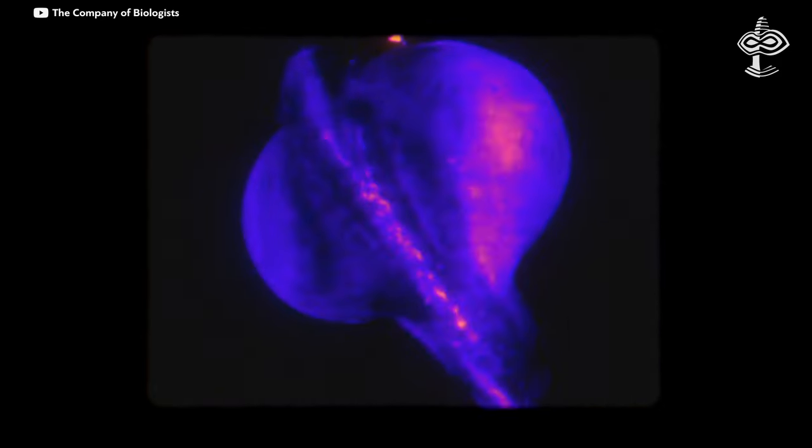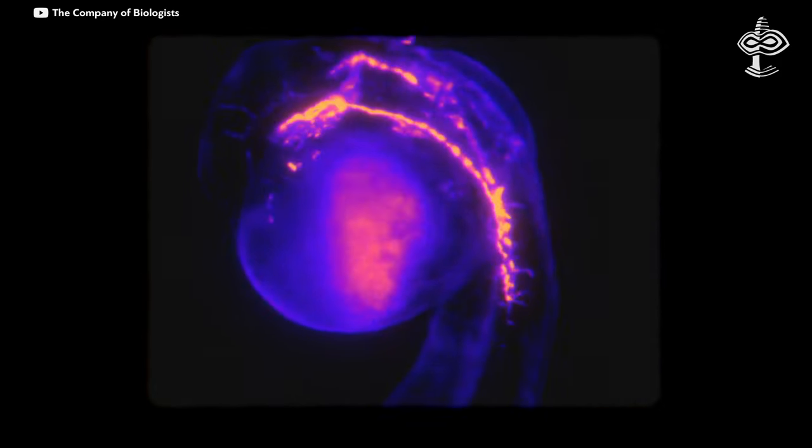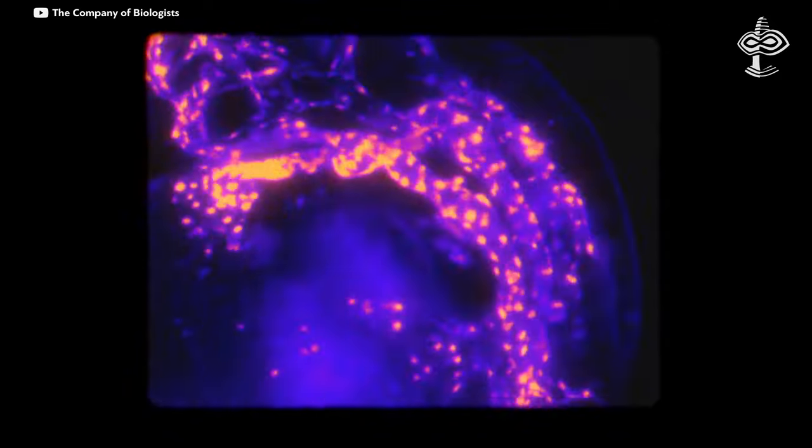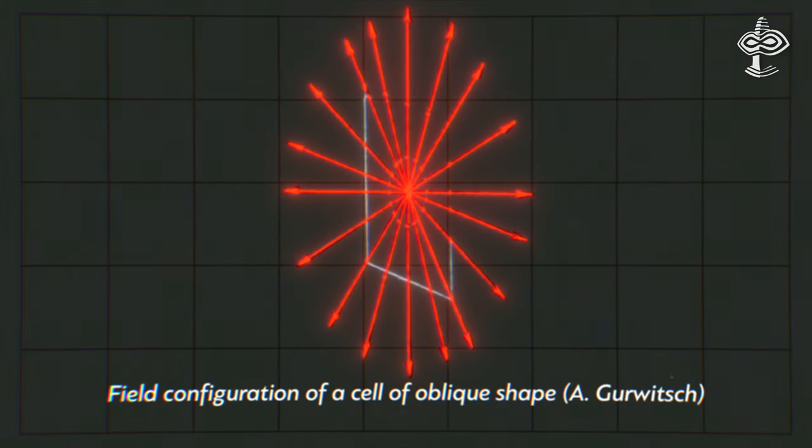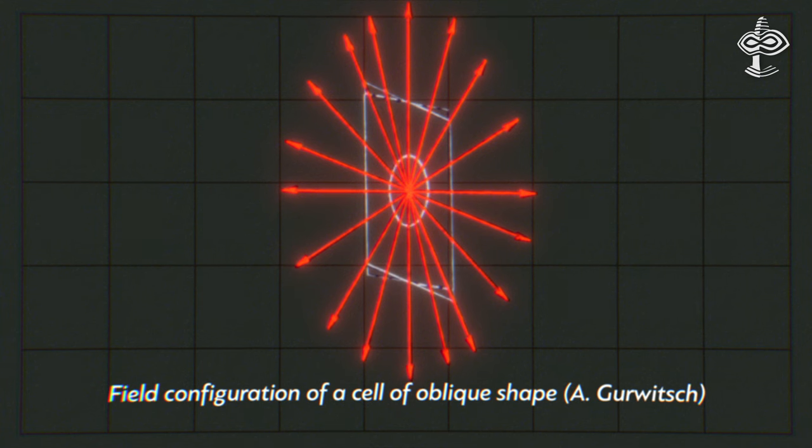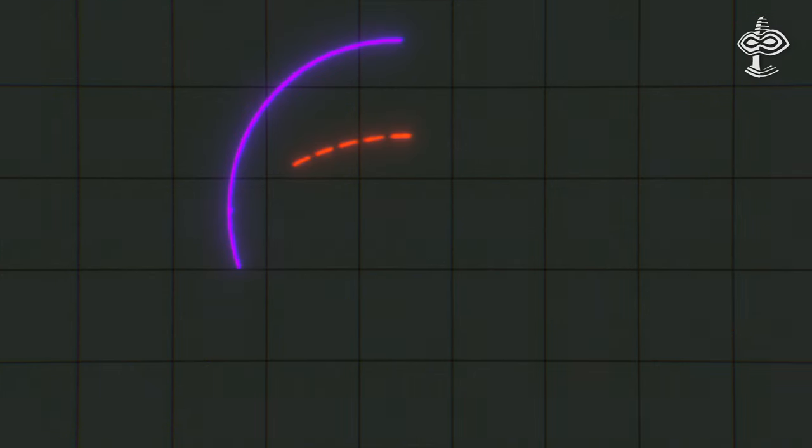He believed that the whole organism must coordinate the emission of ultraviolet photons, which he attributed to its morphogenetic field. He was a true visionary to come up with this idea, because there wasn't any physics works to explain how such a field might work at that time.